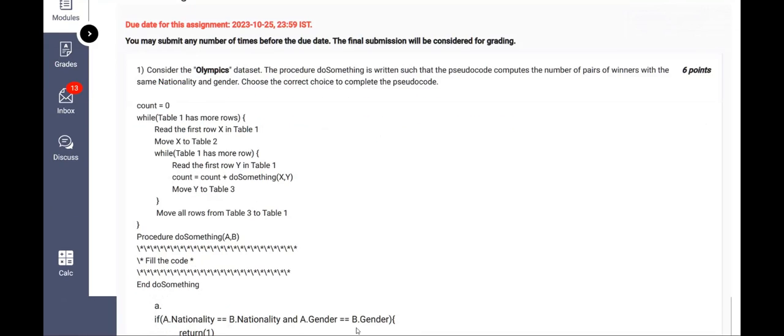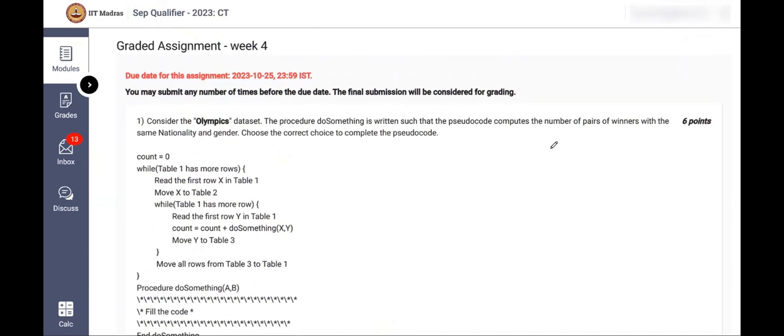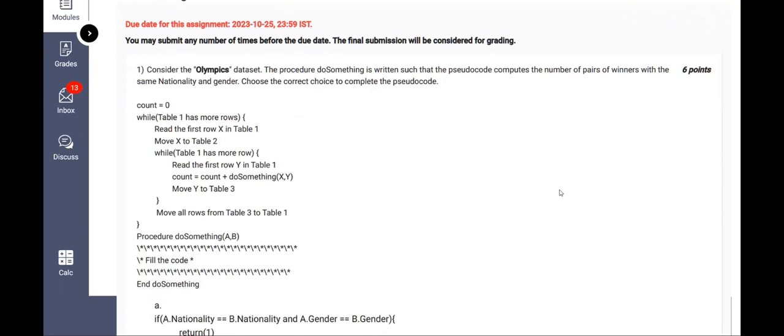This is the first question. Consider the Olympics data set, the procedure do something. What does it do? It captures the number of pairs of winners with same nationality and gender. That means they must be from same nation or same country. And this is the first criteria. And the second criteria is the gender should be same.